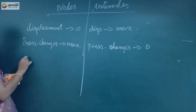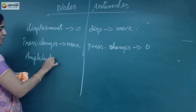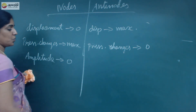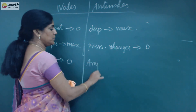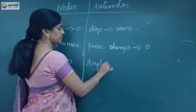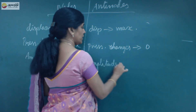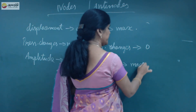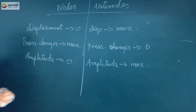And if you see the amplitude, the amplitude will be 0 at the nodes, and the amplitude will be maximum at the anti-nodes.